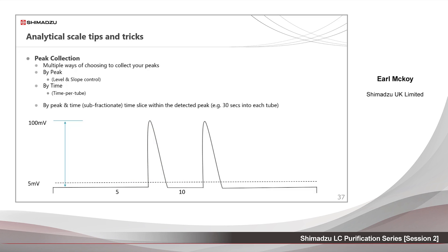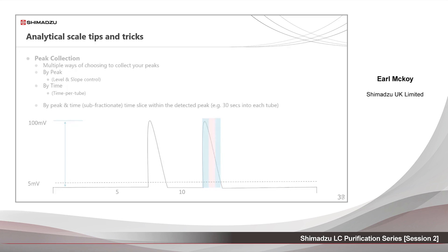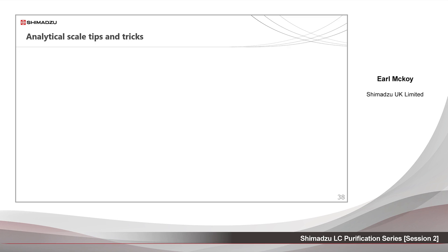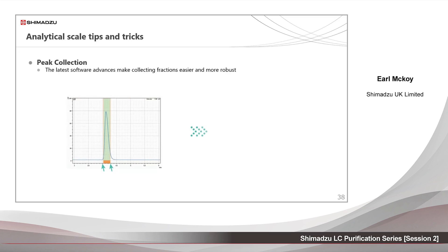Peak plus time: this is best suited to partially resolved peaks or where there is suspicion of a hidden contaminant. It allows some pure material to be gained at the expense of yield. This uses the same peak functions of level and slope, but now adds time per tube to subdivide the peaks. To make the process of setting up collection easier, software simulation allows you to open an optimised analytical run, click on the peak where you want to start collecting, and drag to the point at which you want to stop. The slope values are then stored in the method ready for running.